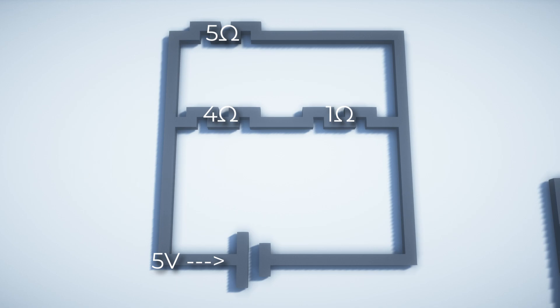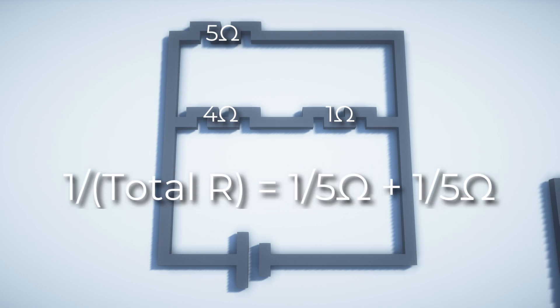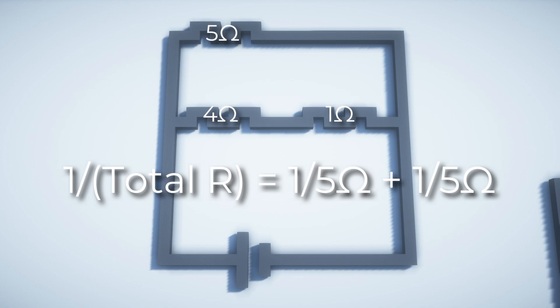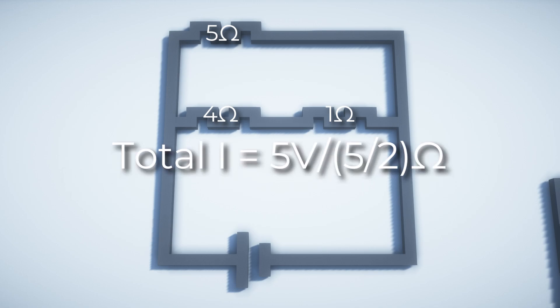So to begin, I would always recommend finding the equivalent resistance as your first step. Now since the series circuit is inside, we can just add 4 and 1 ohms normally and we get 5 ohms as that one resistor. And then now that we just have a simple parallel circuit, we can just do 1 over 5 plus 1 over 5, giving us 2 over 5, and we flip it to get 5 over 2 ohms as the resistance. Now we can find the total current using Ohm's law, giving us 5 divided by 5 over 2, which is 2 amps as the current in the battery.